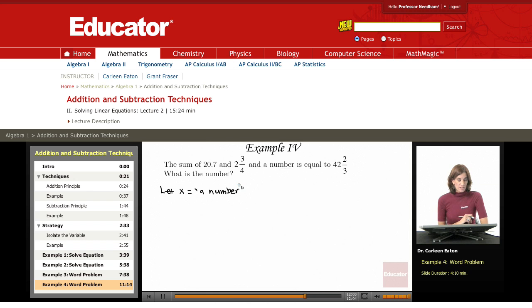I've assigned a variable to my unknown. The next thing I'm going to do is look for the equal sign. The sum of 20.7 and 2 3/4ths and a number is equal to. They made it really easy for me this time by just saying is equal to, so I know that's where my equal sign is.